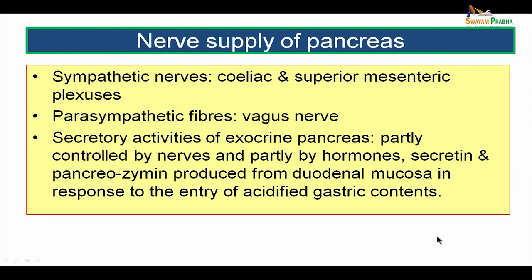The nerve supply of the pancreas: sympathetic nerves come from the celiac and superior mesenteric plexuses. Parasympathetic fibers come from both vagus nerves. Secretory activities of the exocrine part of the pancreas are partly controlled by nerves and partly by hormones like secretin and pancreozymin, produced from the duodenal mucosa in response to entry of acidified gastric contents.